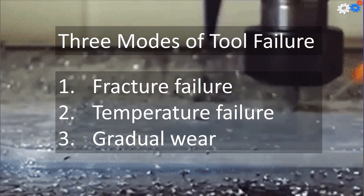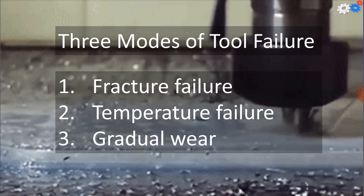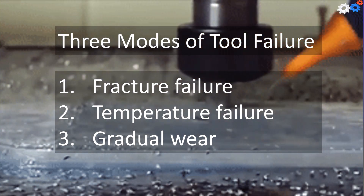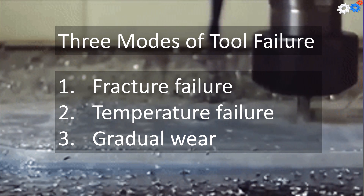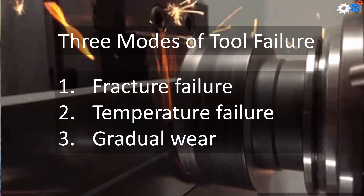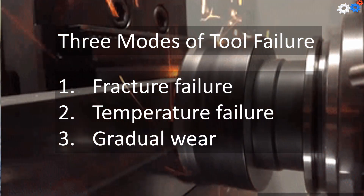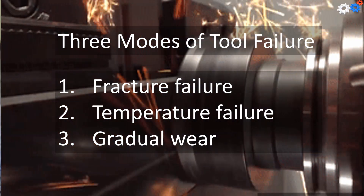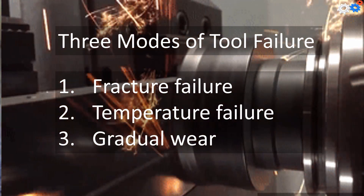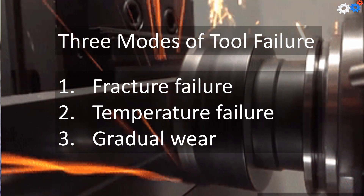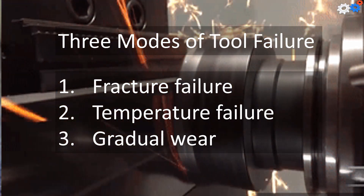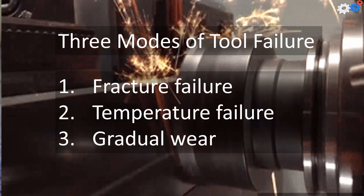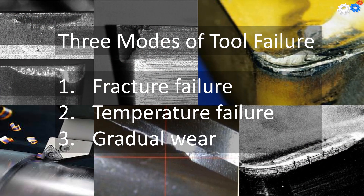The three modes of tool failure are: fracture failure, where the cutting force becomes excessive leading to failure by brutal fracture; temperature failure, where the cutting temperature is too high for the tool material, causing the tool to soften and leading to plastic deformation along with loss of sharp edges; and gradual wear, where progressive wearing of the cutting edge causes loss of tool shape, reduction in cutting efficiency, and finally tool failure.